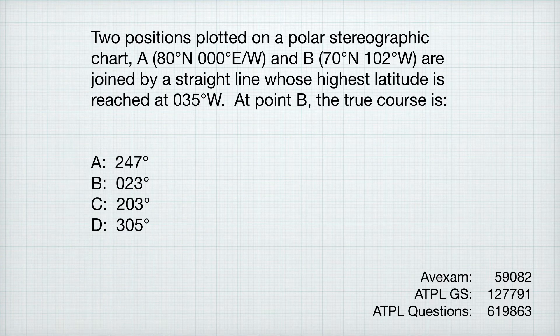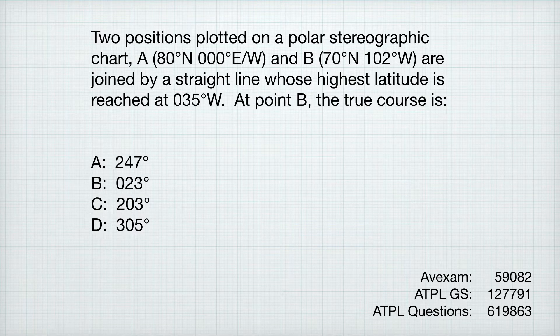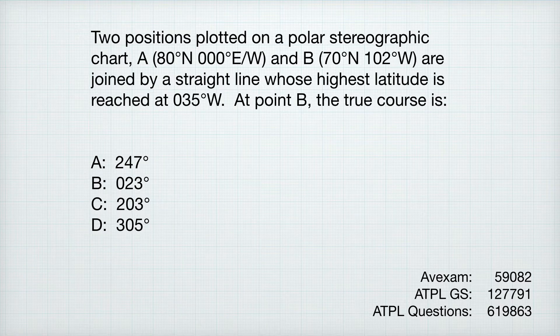Two positions plotted on a polar stereographic chart, A and B, are joined by a straight line whose highest latitude is reached at 035 degrees west. At point B, the true course is dot dot dot. Notice that A and B have got different latitudes, so we need to take that into account. We've got some pretty particular numbers — 102 degrees west — and the answers are really specific, not rounded. That says we need to be quite careful about doing this accurately.